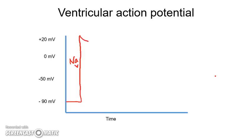This fast depolarization is due to voltage-gated sodium channels opening (Nav channels) and is called Phase 0. Once the sodium channels close, repolarization occurs immediately — this is called Phase 1. Phase 1 is due to movement of potassium ions outside the cell, or sometimes chloride ions moving inside. These ion currents are called ITO, that is the transient outward current.